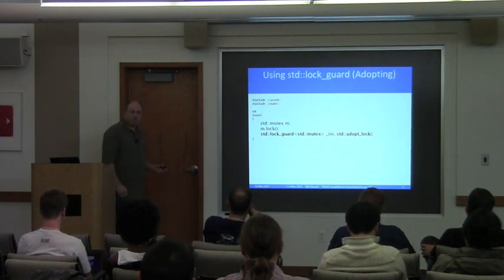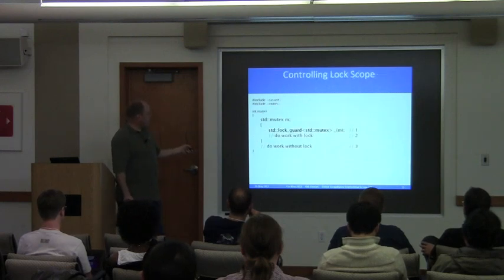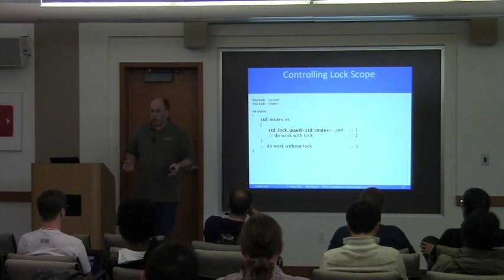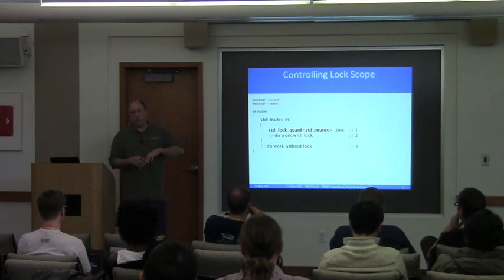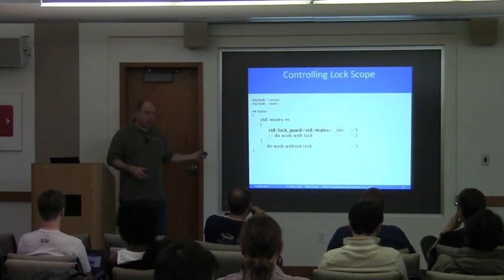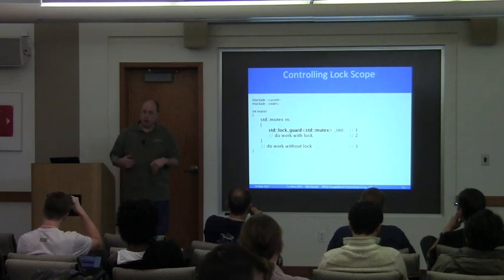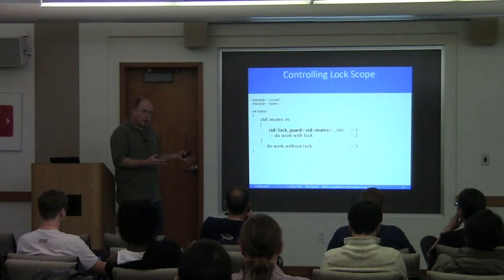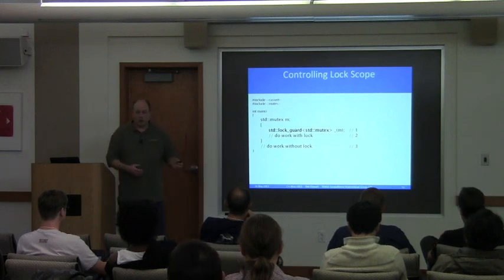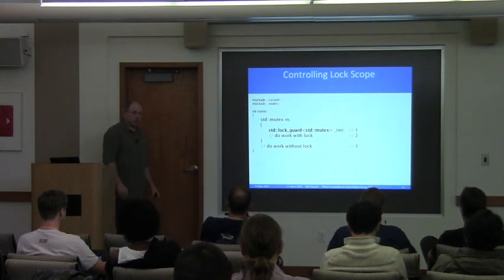Another use case is to introduce a block to control the scope, because you want to keep your critical section as short as possible. You want to own the lock for as short a time as necessary to control what needs to be synchronized, but no longer than necessary so other threads can make progress. Introduce a scope so the lock_guard is destroyed at the right time — you do work at line two while you own the lock, and at line three when you don't.